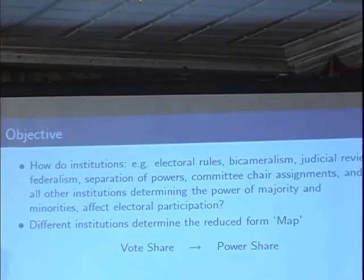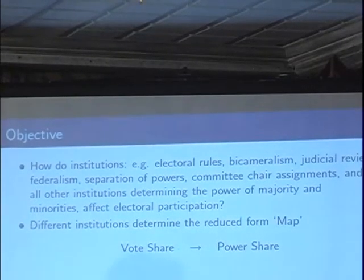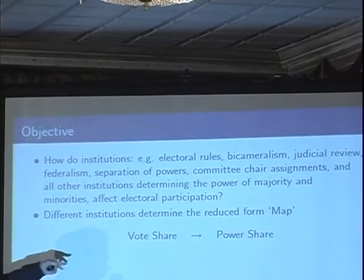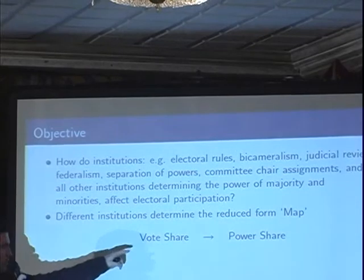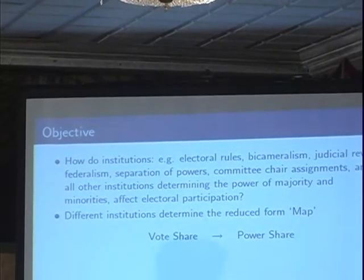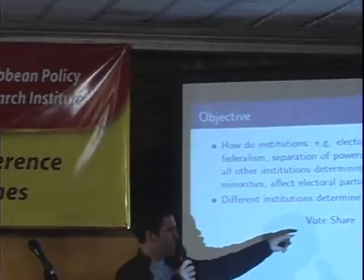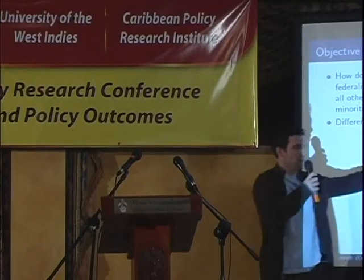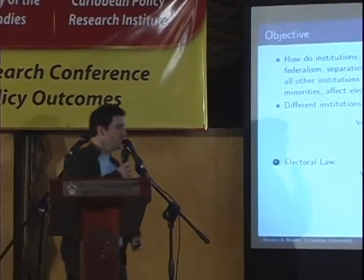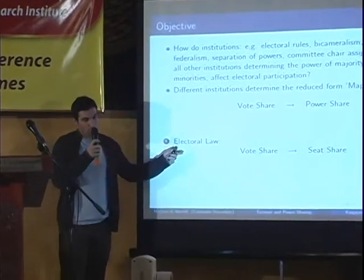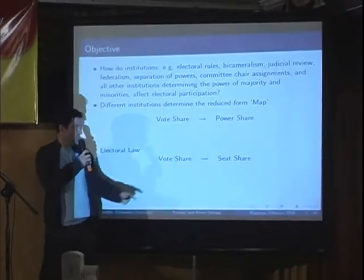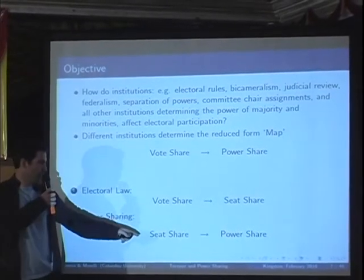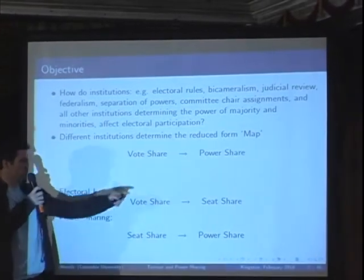How do these affect participation? We think about an election that gives a vote share, and that vote share is mapped — according to whatever the institutions are — into a share of power, which need not be the same share. You can think of this in two steps: an electoral law that maps vote shares into seat shares in parliament, and a power-sharing law that maps seat shares to power sharing. The composed mapping is what we're looking at.